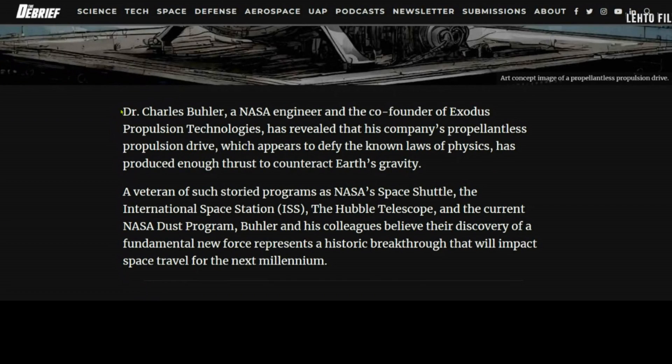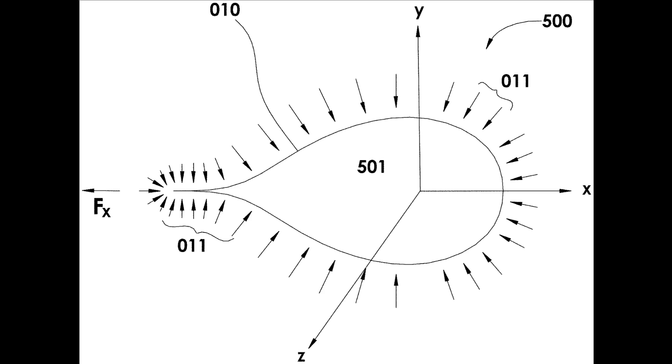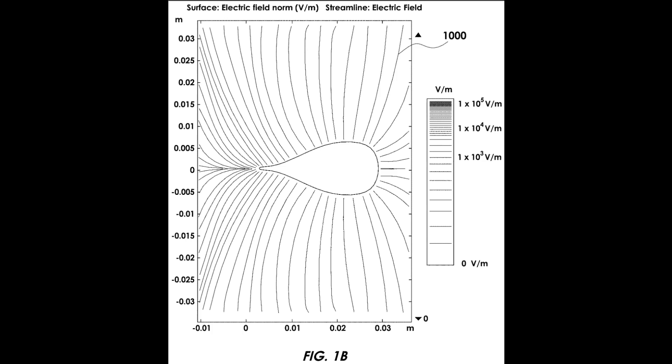That's Dr. Charles Buehler, NASA engineer and co-founder of Exodus Propulsion Technologies, has revealed that his company's propellantless propulsion drive, which appears to defy the known laws of physics, has produced enough thrust to counteract Earth's gravity. That means they have one G of force at least, which is amazing without any sort of propellants.